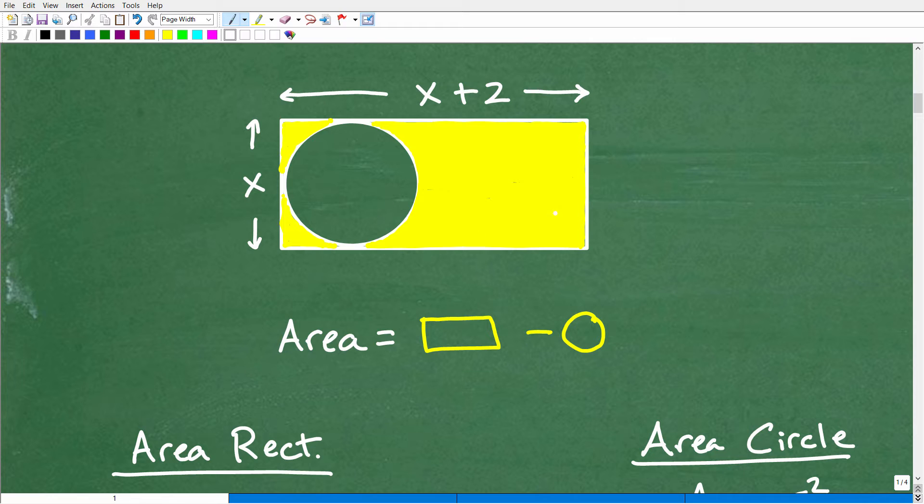And that's effectively how you have to think about this. So the area of this yellow region is going to be the entire area of the rectangle minus the area of the circle, like as if we were going to cut it out with some scissors. That is going to give us the area that we're interested in.